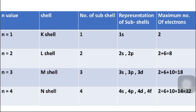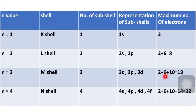This table shows the n-value, shell name, number of sub-shells, representation of sub-shells, and maximum number of electrons. For example, if the value of n is 3, it is the M-shell with three sub-shells represented as 3S, 3P, and 3D. The S sub-shell holds 2, P holds 6, and D holds 10 electrons. Adding them gives 18, which is the maximum limit for the M-shell.